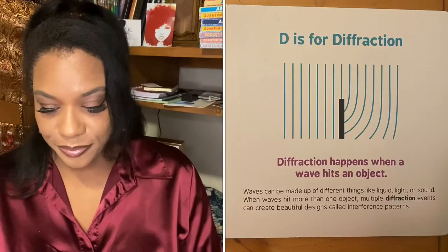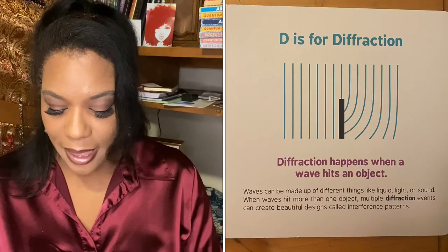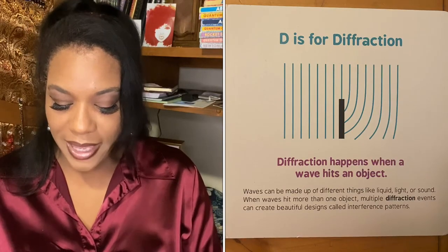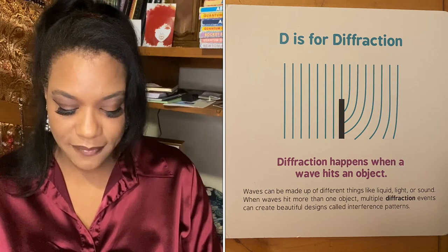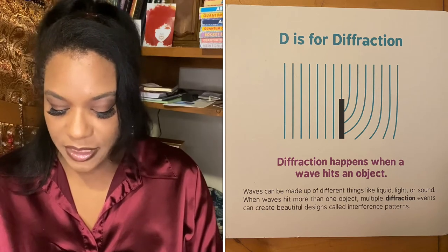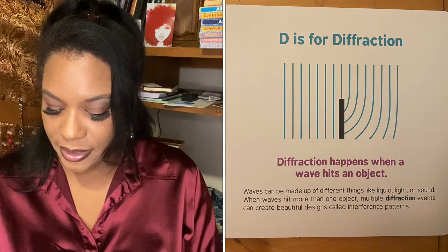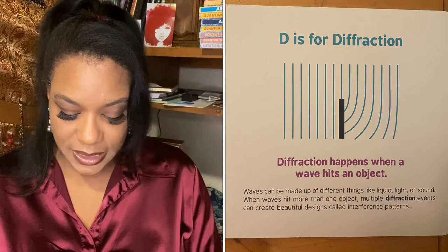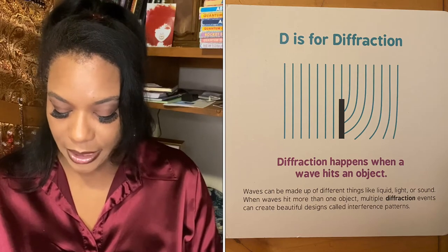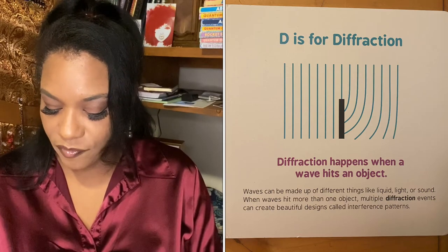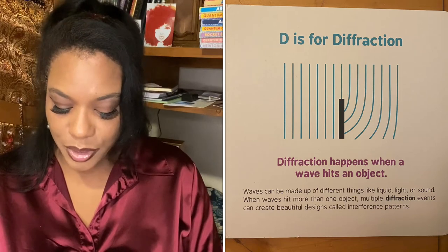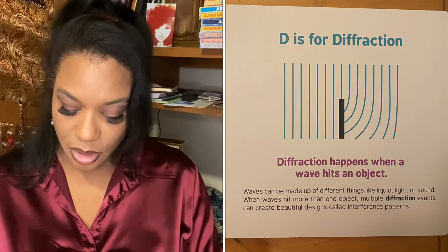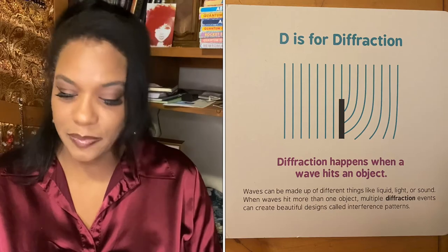D is for diffraction. Diffraction happens when a wave hits an object. Waves can be made up of different things like liquid, light, or sound. When waves hit more than one object, multiple diffraction events can create beautiful designs called interference patterns.